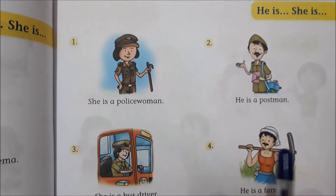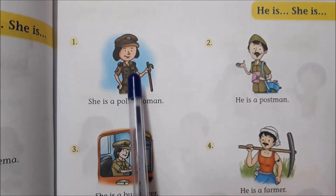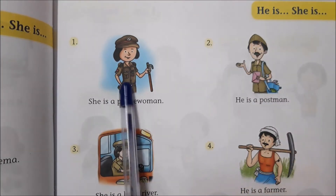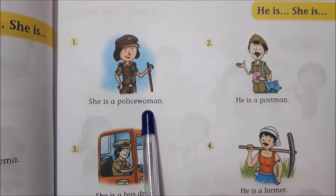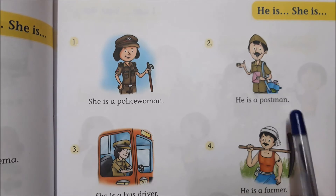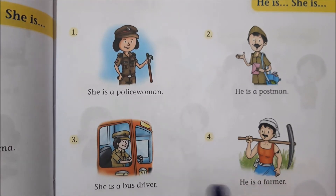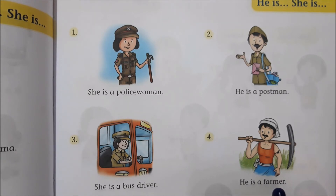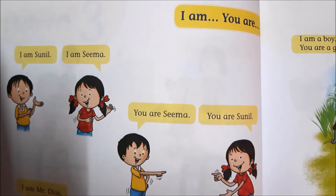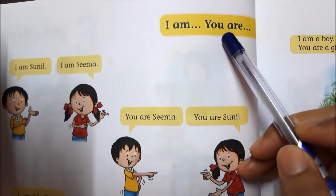Let's do a little more from this chapter of he is and she is. Look at this picture. She is a police woman. He is a postman. She is a bus driver. He is a farmer.